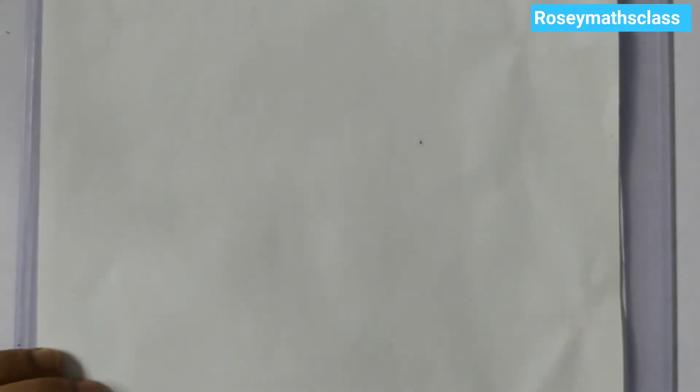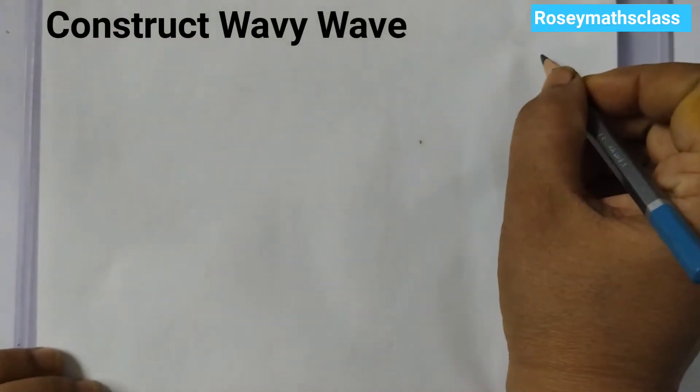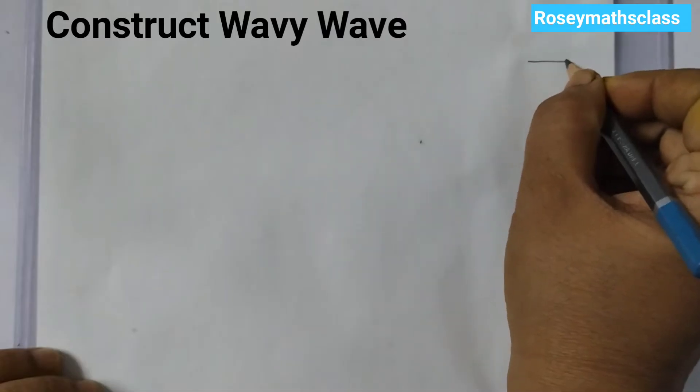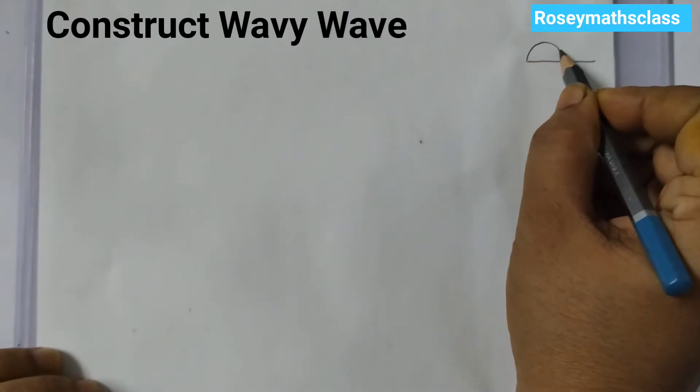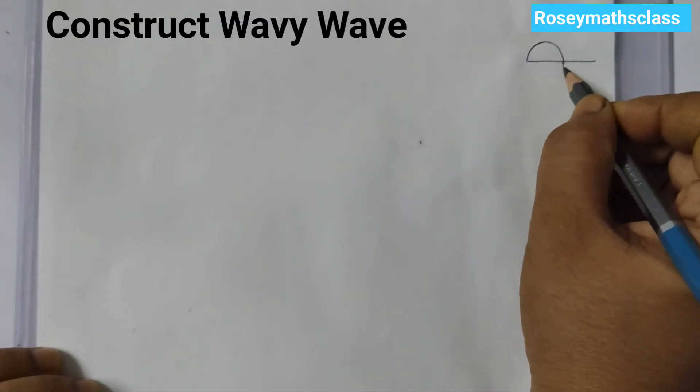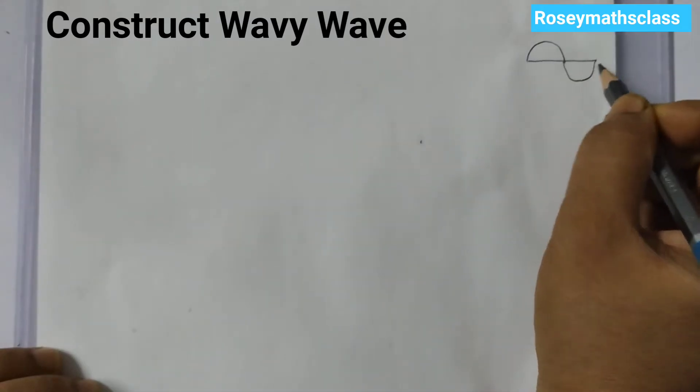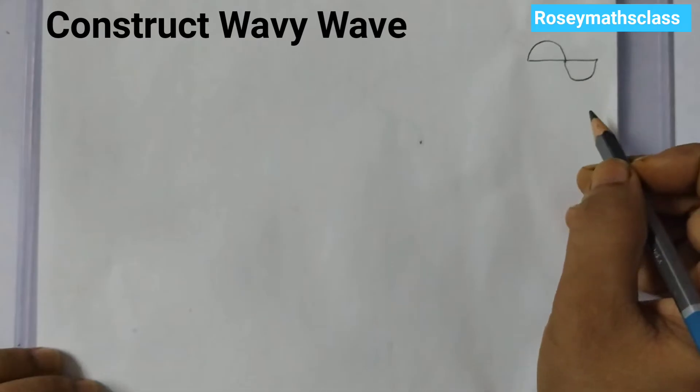So let us start constructing the wavy wave. It looks something like this. You have a central line. You have a wave up on the upper side and a wave on the lower side of this line. So this is the rough sketch of the figure that we are going to draw.